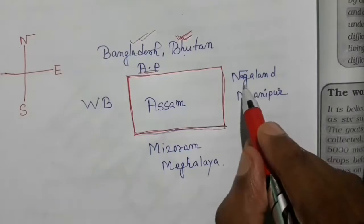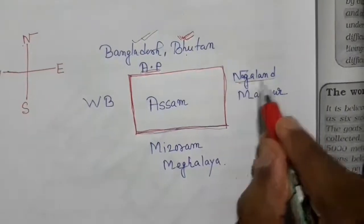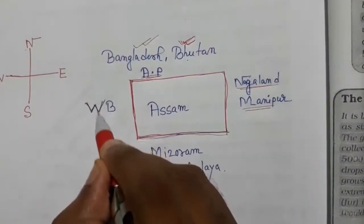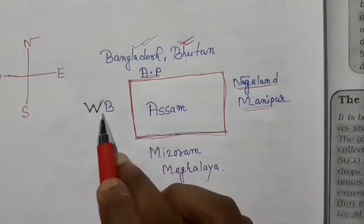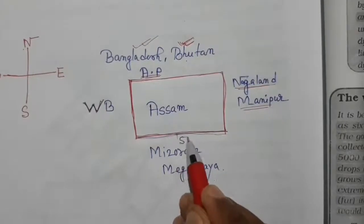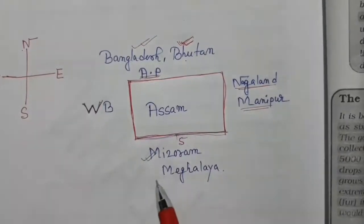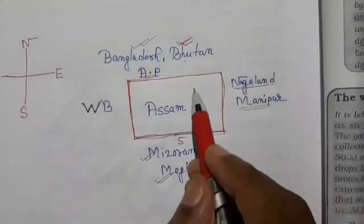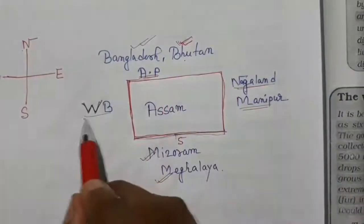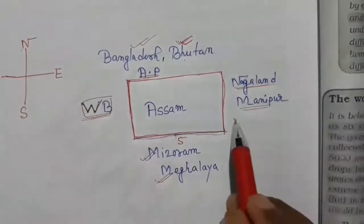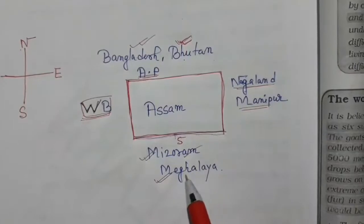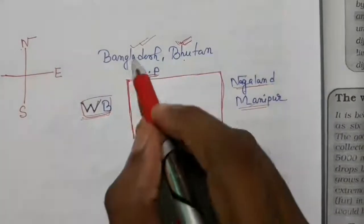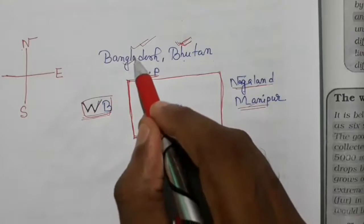On the east you will find two states of India: Nagaland and Manipur. On the west you will find West Bengal — it is easy to remember, west of Assam is West Bengal. On the south there are two states of India. All states on the boundary of Assam are hill areas except West Bengal. The neighbors include Mizoram, Meghalaya, Nagaland, Manipur, Bangladesh, Bhutan, and Arunachal Pradesh; some parts of Bangladesh are plain areas and the rest are hill areas.